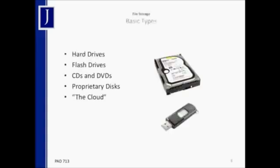Once we have the data, where are we going to put it? There are many basic types of storage drives available. There is the traditional hard drive, which comes in two standard sizes — one for desktops, one for laptops. There are flash drives, which most of us have as USB thumb drives. There are also more antiquated technologies such as optical media — CDs and DVDs — and proprietary discs such as zip discs from the late 1990s and early 2000s. Many of these technologies are being phased out because what's really taking over, as of 2011, is cloud storage.